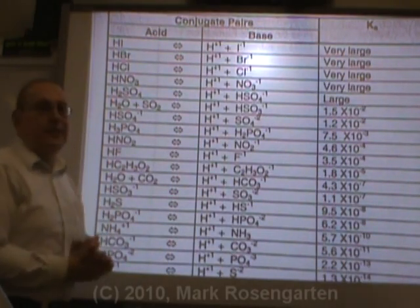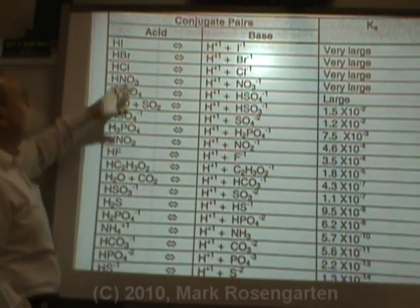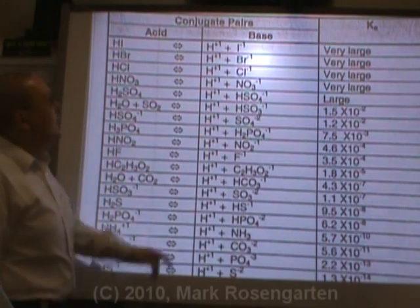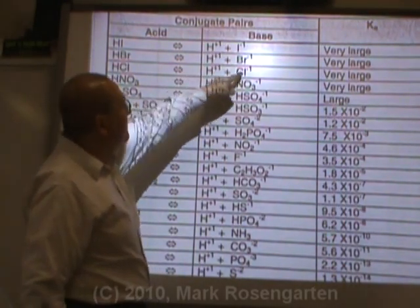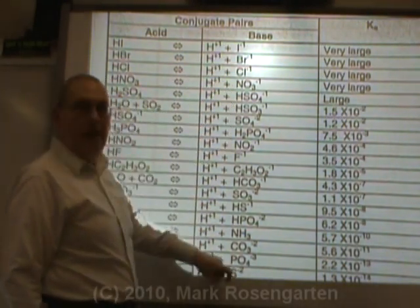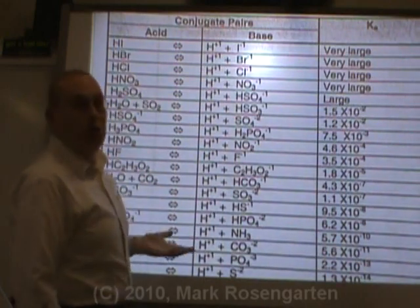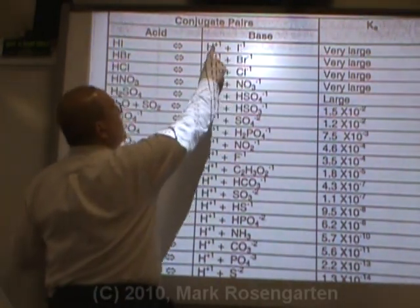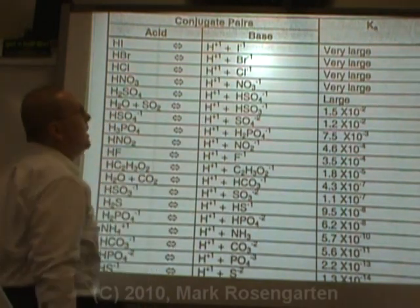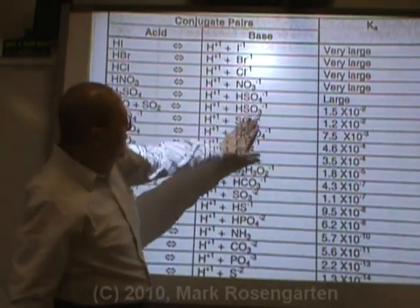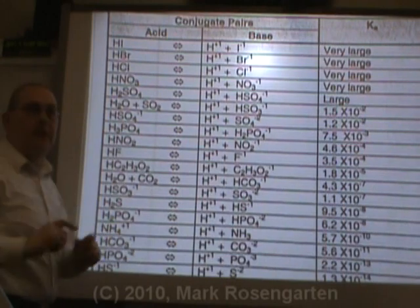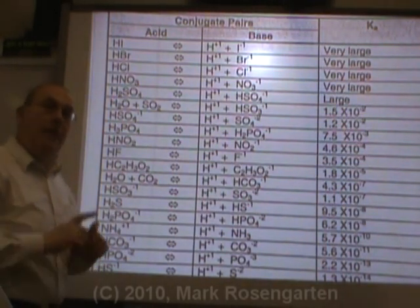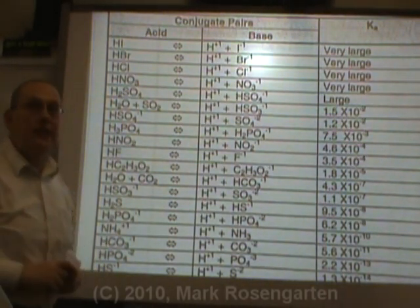On the reference table C, anything listed on the acid side can act as an acid, and anything listed on the base side can act as a base. The H is there to balance the reaction — for example, HI loses H+ to become I-. If you can find a substance on both sides of this table, that's when you know it's amphiprotic.